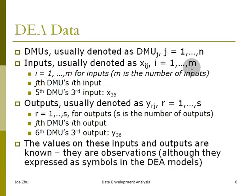M is the number of inputs. So if you have three inputs, then m is equal to 3. And for the jth DMU's ith input, that's x_ij. So if you have x_35, that means the third input for DMU number 5.